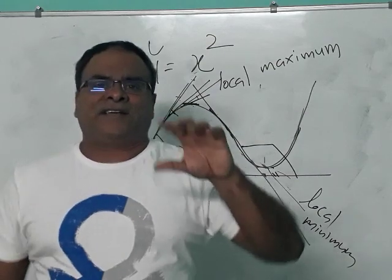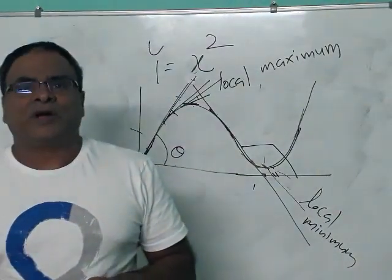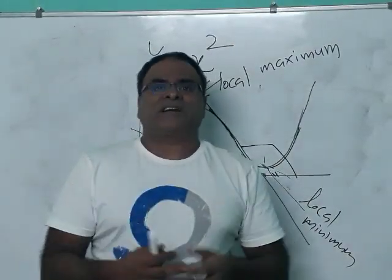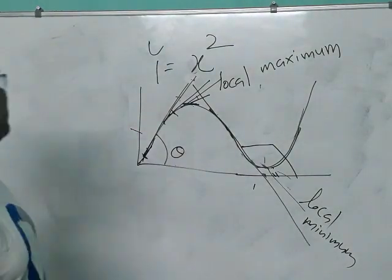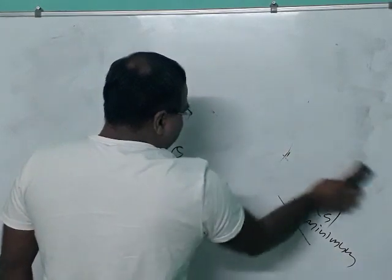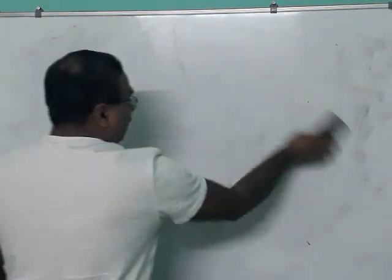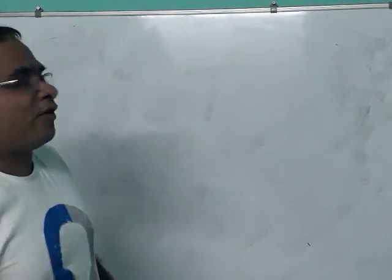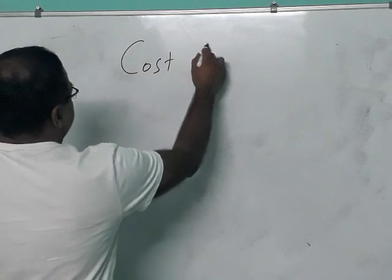I discussed it clearly — what is a function. So please watch the previous video. This gradient descent is used to optimize or to find out the minimum of a function. That function is known as cost function.